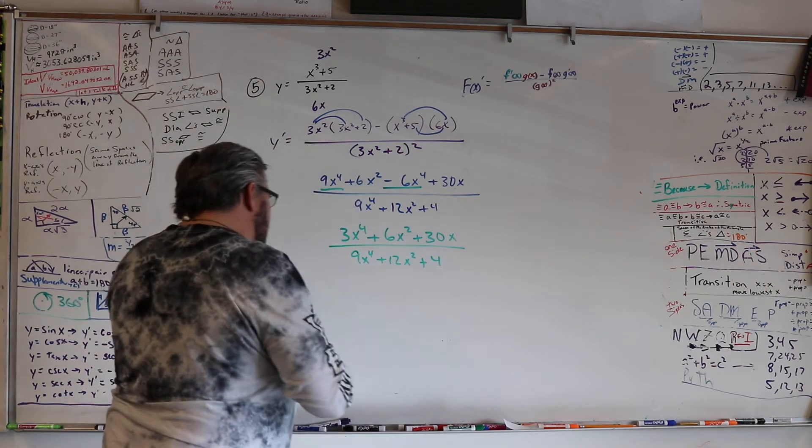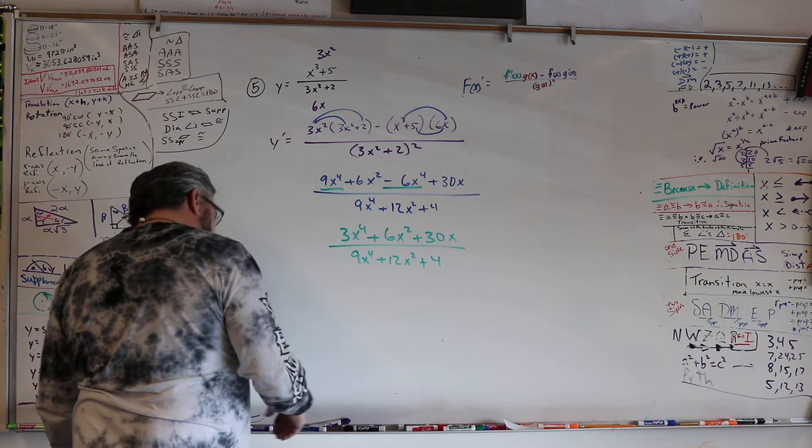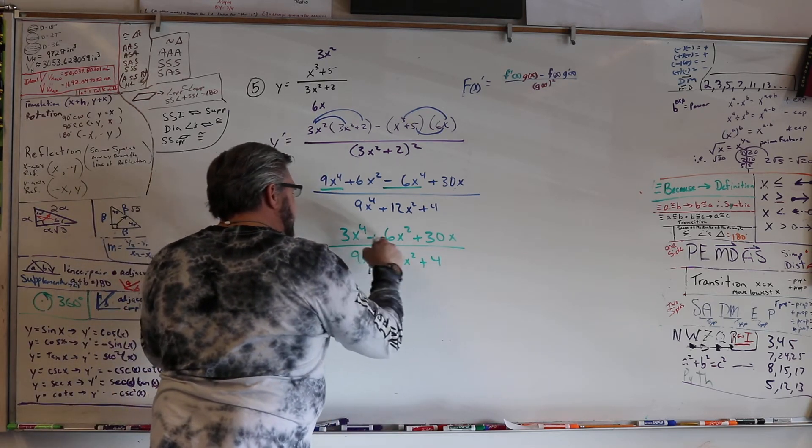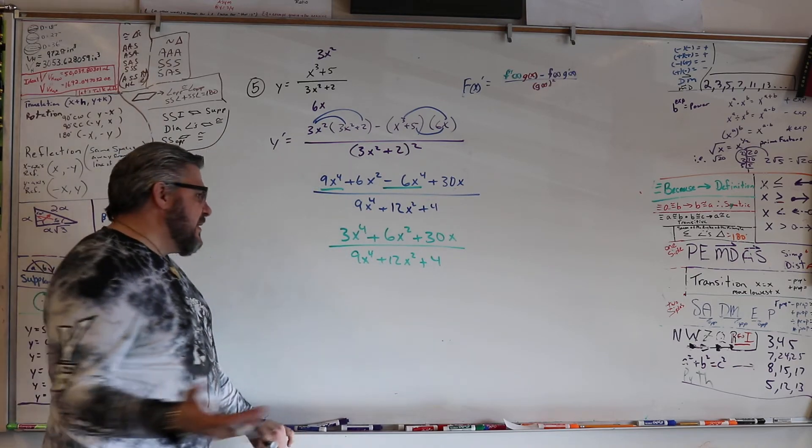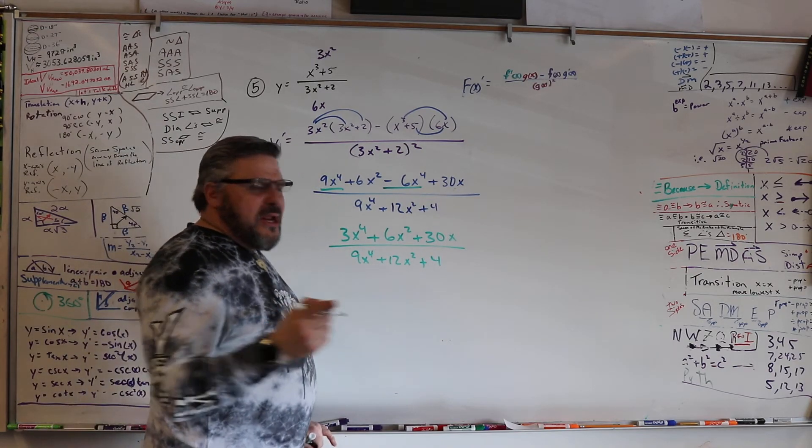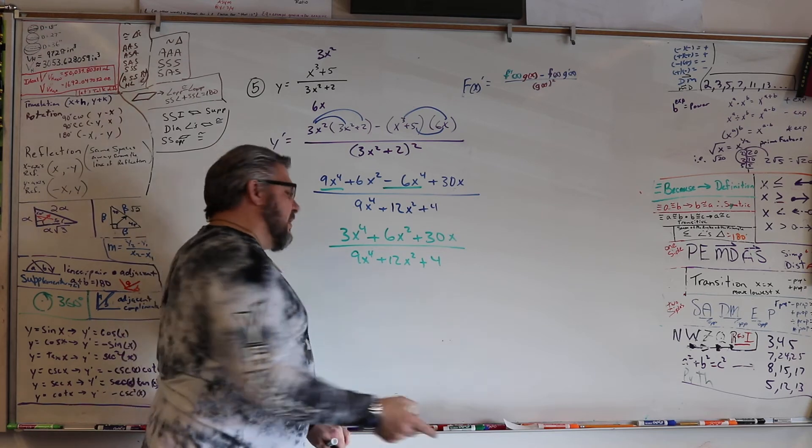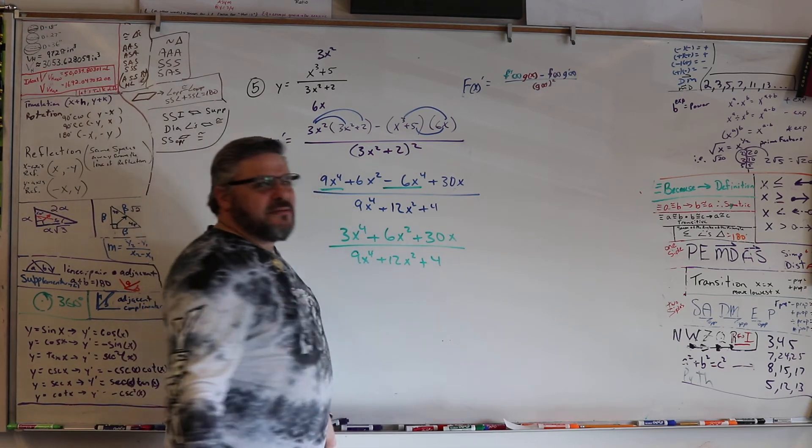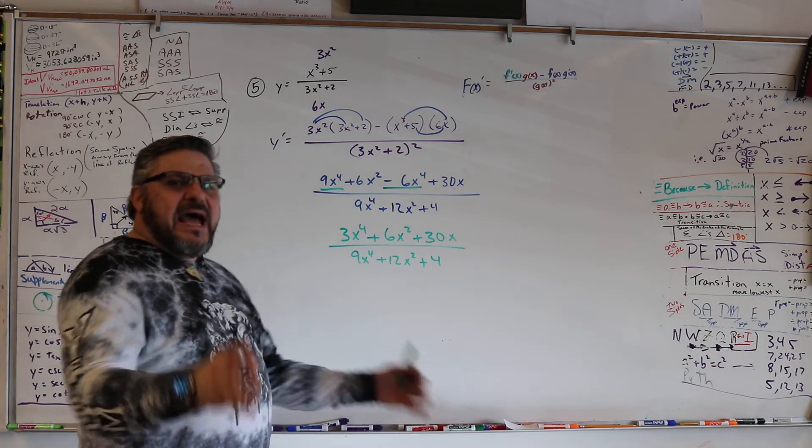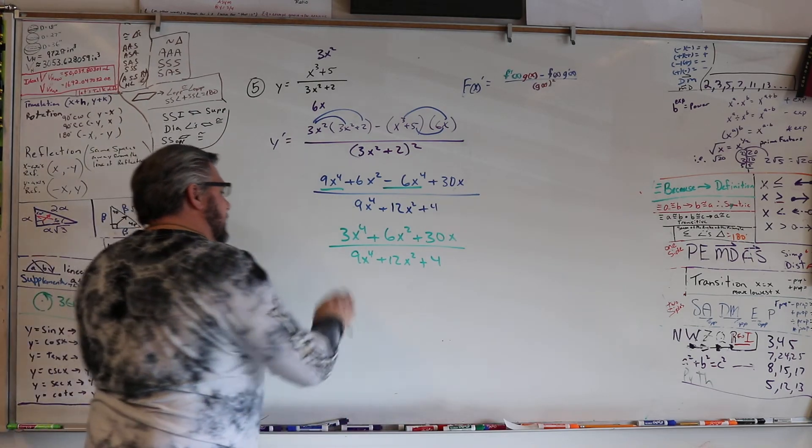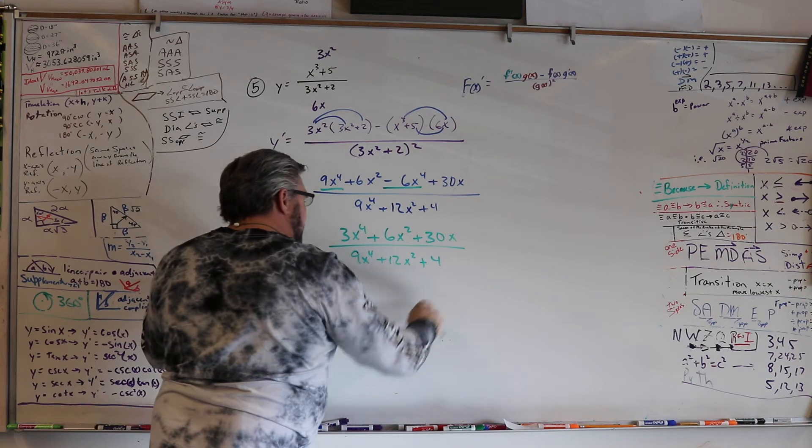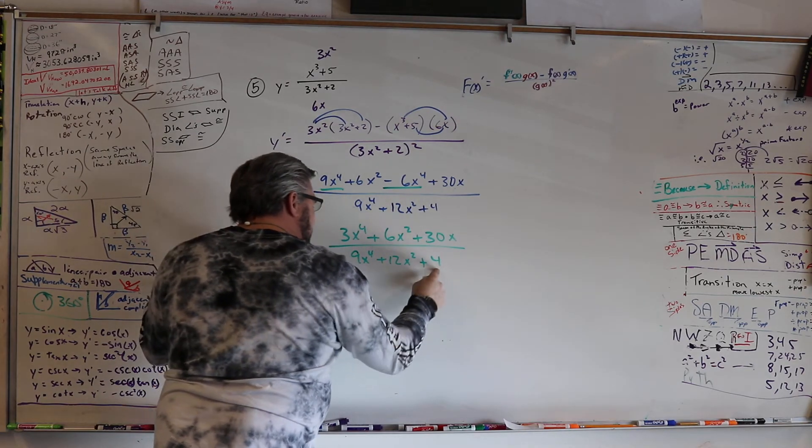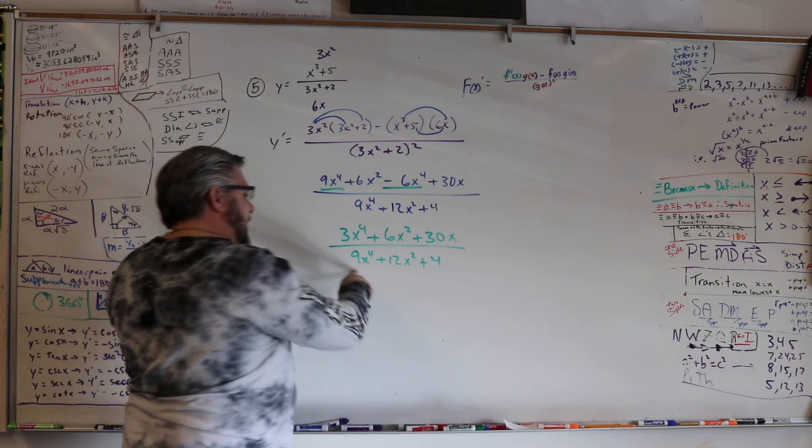Now, I just want to ask myself, can any number go into 3, 6, and 30? Yeah, of course. 3 can. Can 3 go into 9? Yes. Can 3 go into 12? Yes. Can 3 go into 4? No. So, at that point, I know that there's no number that goes into every single one of these numbers, because 2 will go into these, but won't go into that.